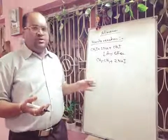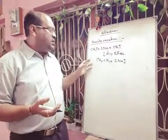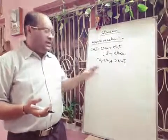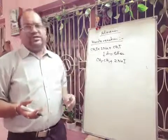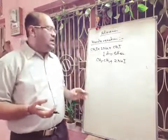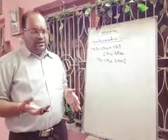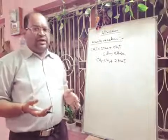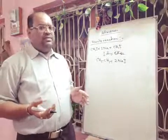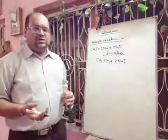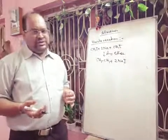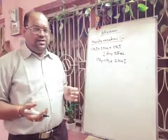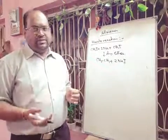In the case of even-numbered alkanes, we use the Wurtz reaction. For odd-numbered alkanes, we can use another important reaction called the Corey House synthesis — but this is not in your syllabus; it is beyond your syllabus and will be discussed in Class 11.